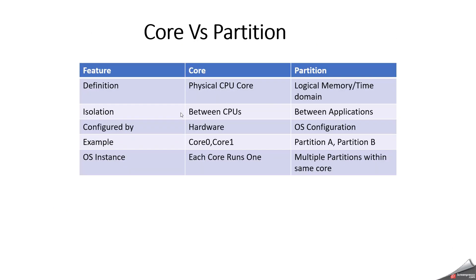What is the difference between core and partition? Core is a physical CPU core, while partition is a logical memory boundary. Isolation for cores happens between CPUs, but partition isolation happens between applications. Cores are configured at the hardware level, while partitions are mainly configured on the OS configuration side. For example, cores are named Core 0 and Core 1; partitions are named Partition A, B, C. Each core runs one OS instance, but multiple partitions can exist within the same core.